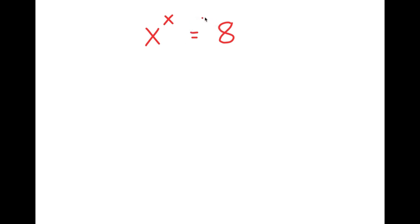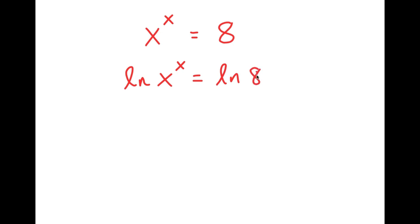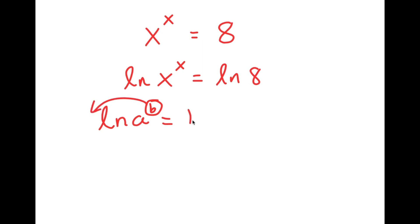At first glance, this problem may look challenging. To solve this, I'm going to start by taking the ln or natural log on both sides. So I'll get ln of x to the power of x is equal to ln 8. A helpful property of logarithms is that if I have something in the form ln a to the power of b, I can move the exponent to the front, so it turns into b times ln a.